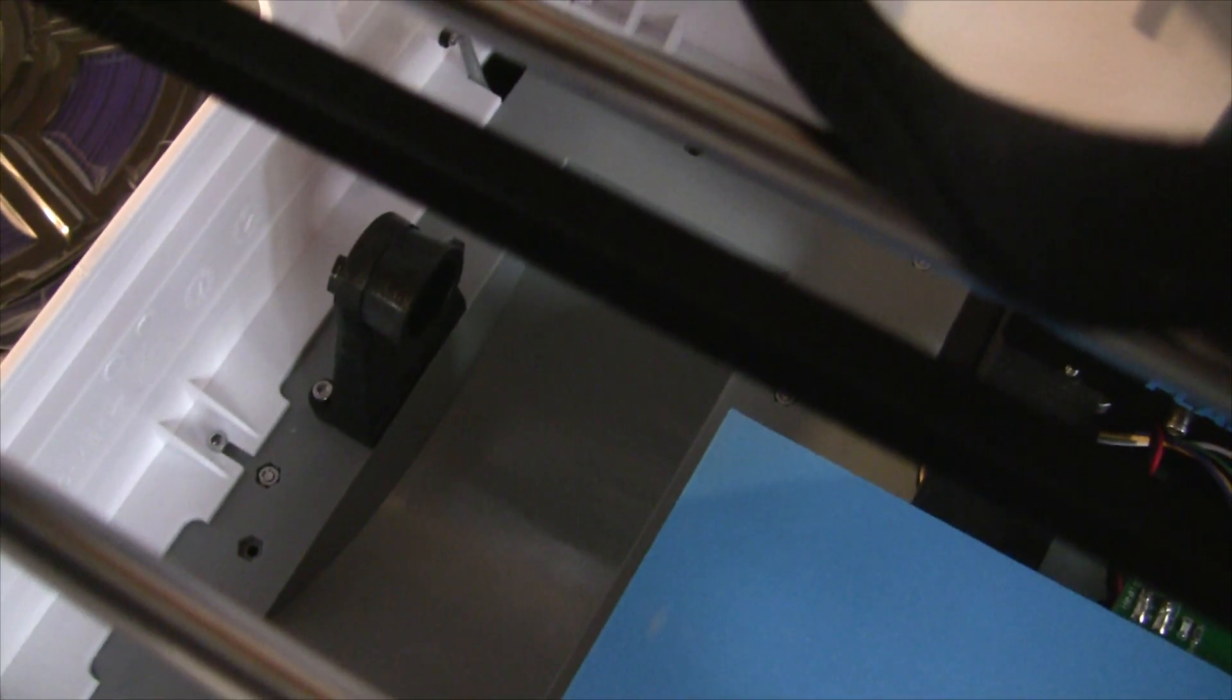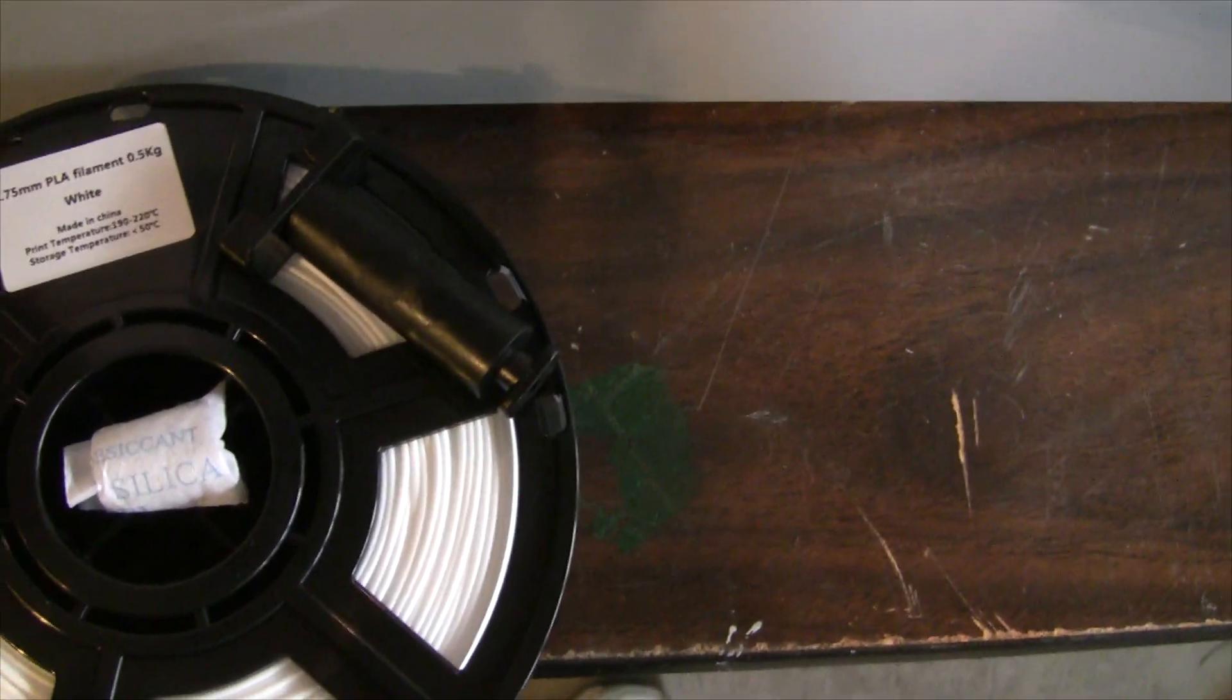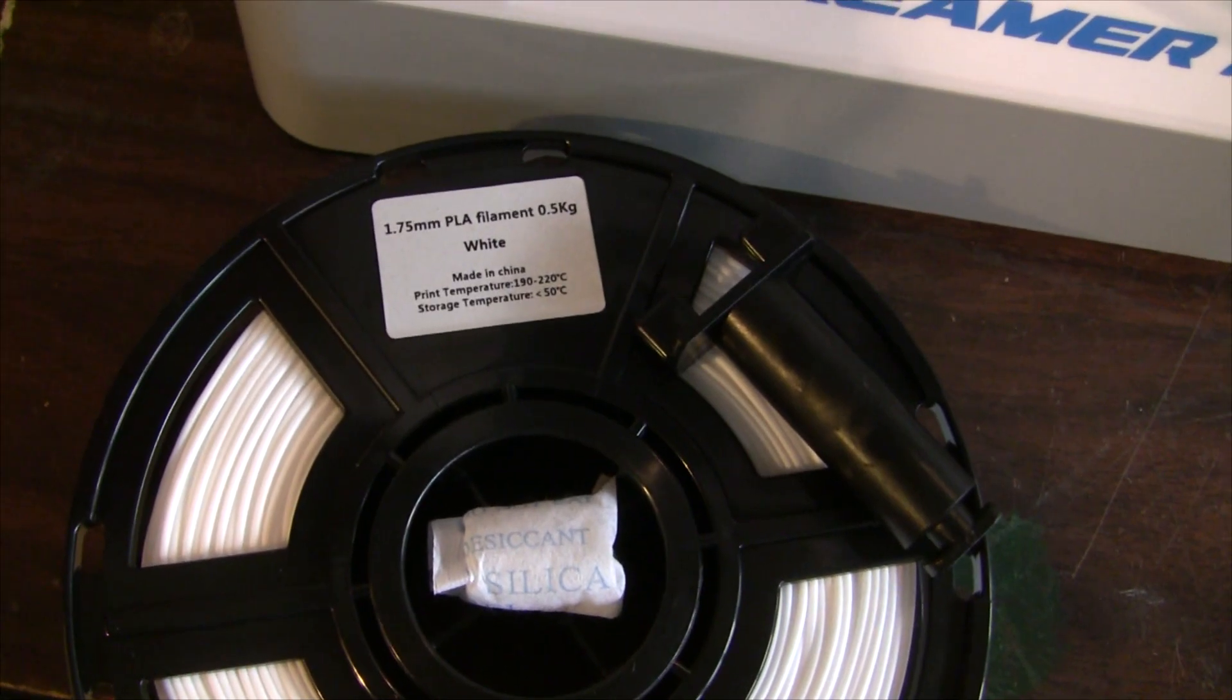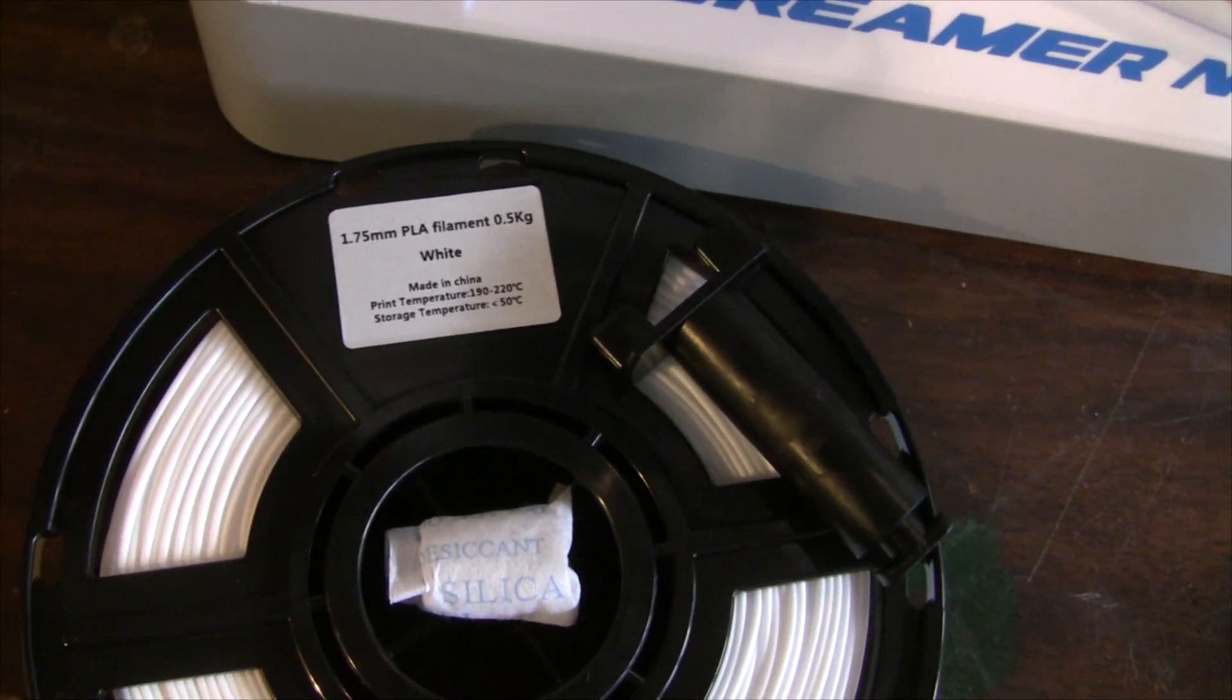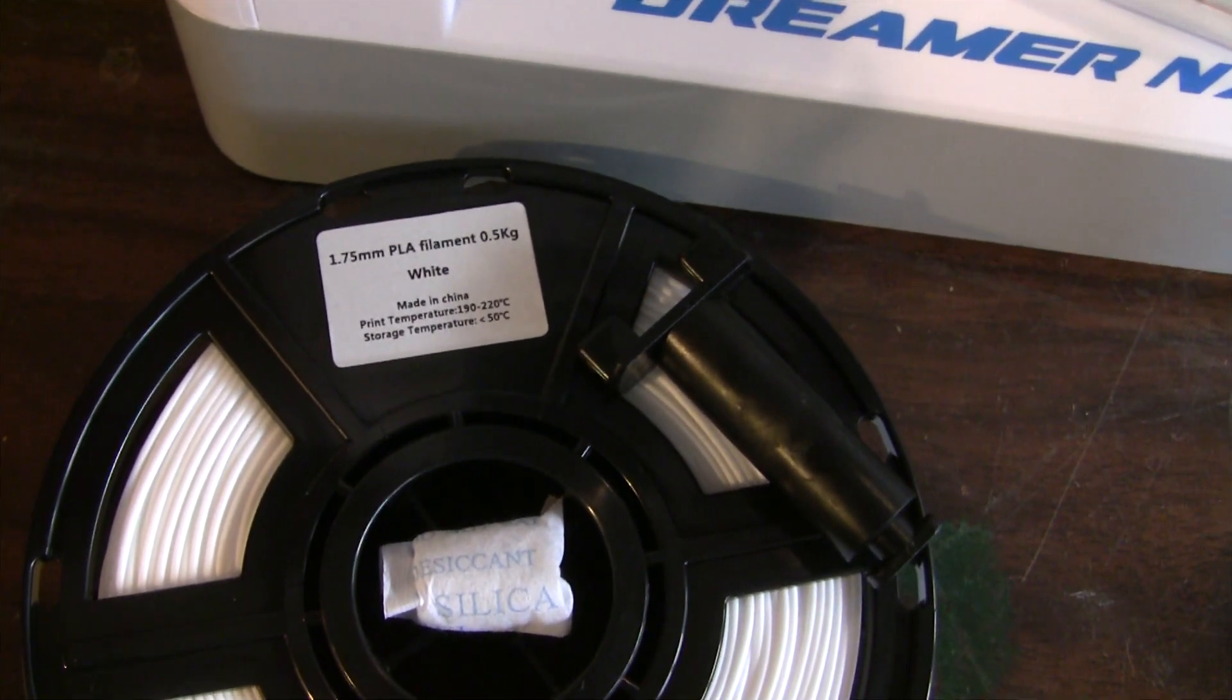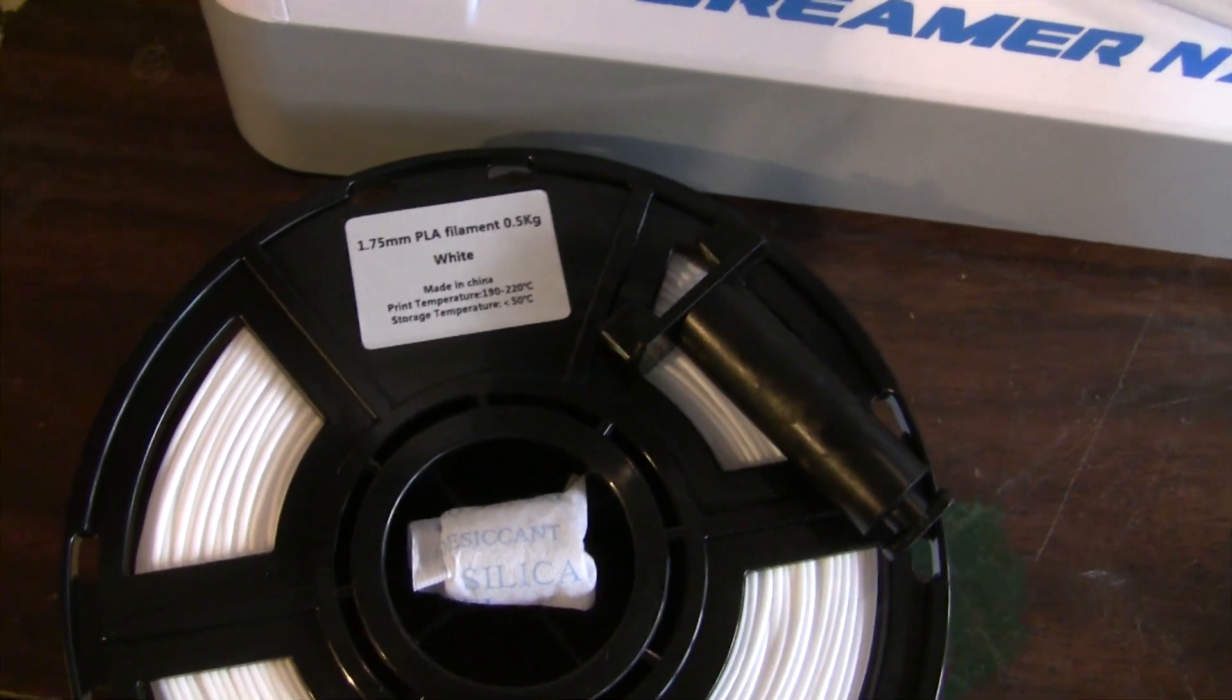Now this particular filament holder, from what I've read, can only handle smaller. It can't handle a one kilogram reel. The ones that come with it are half a kilogram. But there is a project on Thinkverse that is a holder that will fit any size reel up to one kilogram. So at some point, pretty soon, I'm going to print one of those out so I can use that for any size reel that I get in the future.